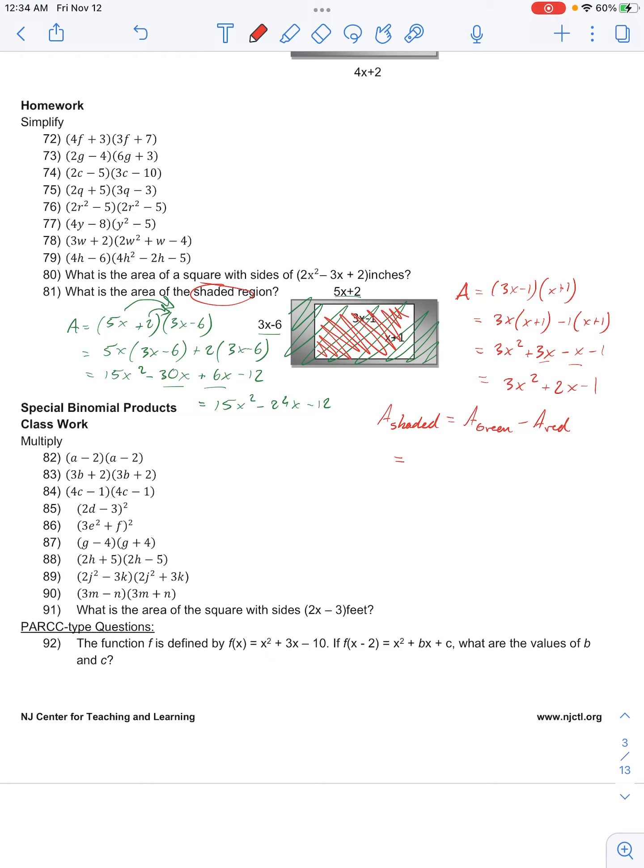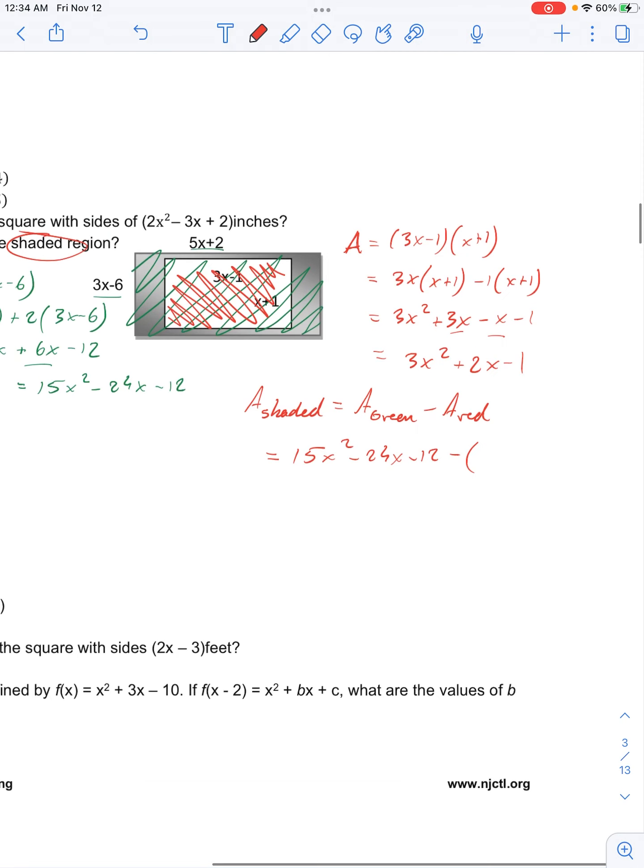So we'll have area green given by 15x squared minus 24x minus 12, all subtracted by, in parentheses, 3x squared plus 2x minus 1.